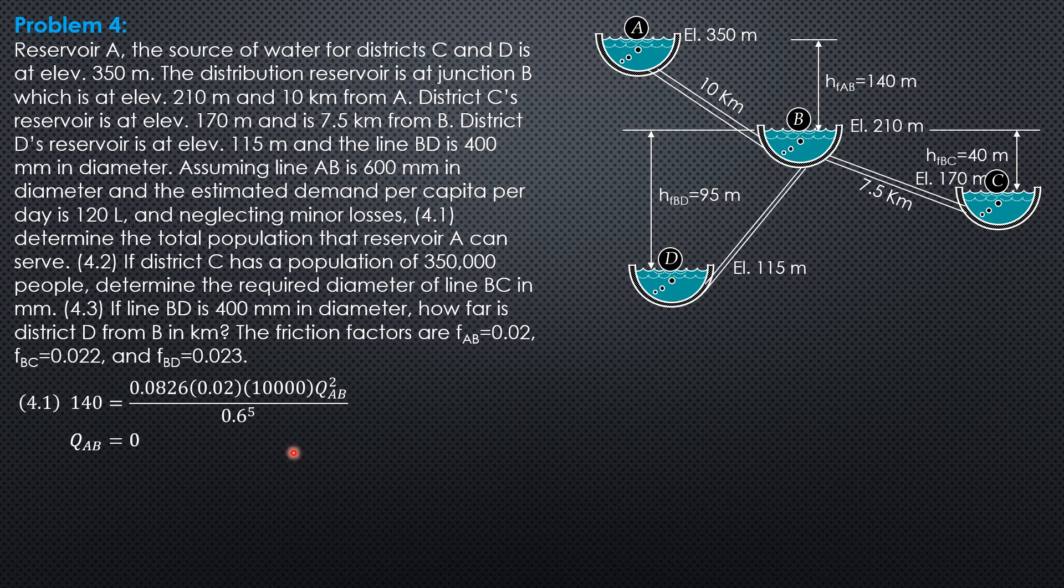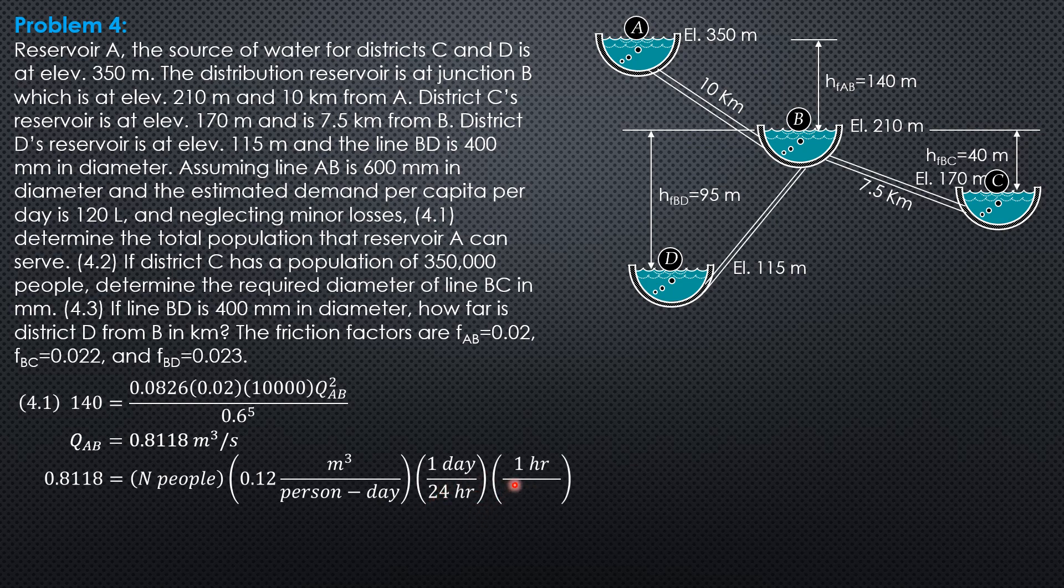So, Q_AB is equal to 0.8118 cubic meter per second. Then, we equate that to number of people times 0.12 cubic meter per person per day, per capita per day, then 1 day, 24 hours, 1 hour, 3,600 seconds. So, that would now be in cubic meter per second, which is consistent.